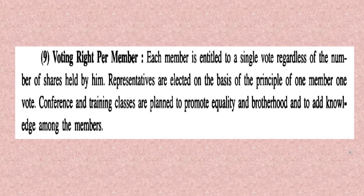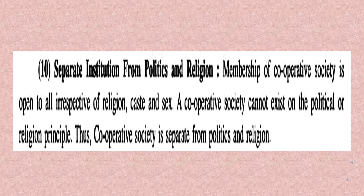Voting right per member: Each member is entitled to a single vote regardless of the number of shares held by him. Representatives are elected on the basis of the principle of 'one member, one vote.' Conferences and training classes are planned to promote equality and brotherhood and to add knowledge among the members. In a cooperative society, voting right is per member, not based on shares — a member with any number of shares can give only a single vote.